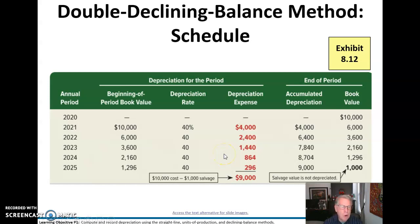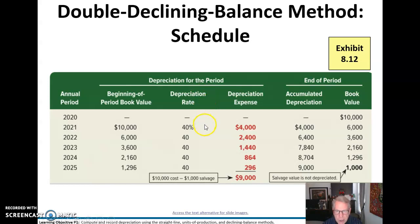Hi everybody and welcome back to chapter 8 and our second video. When we left off we were looking at double declining balance. It's good to know how we get that depreciation rate. We're going to take five years, divide it into 100 percent — that gives us 20 percent — and we're going to double it: 20 times 2 equals 40 percent.